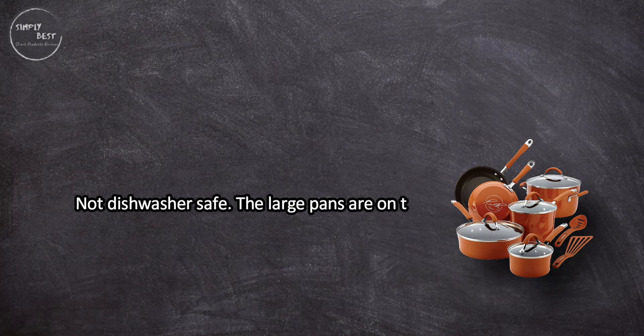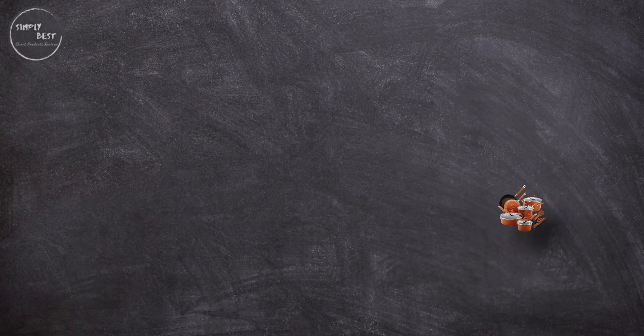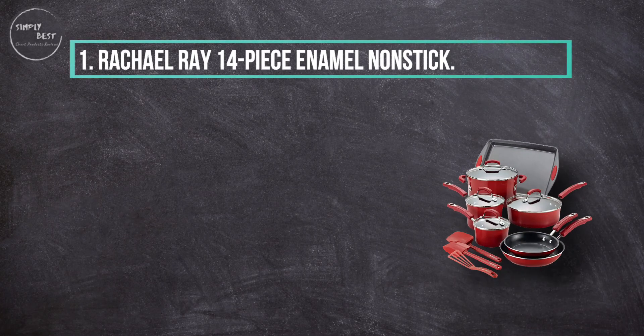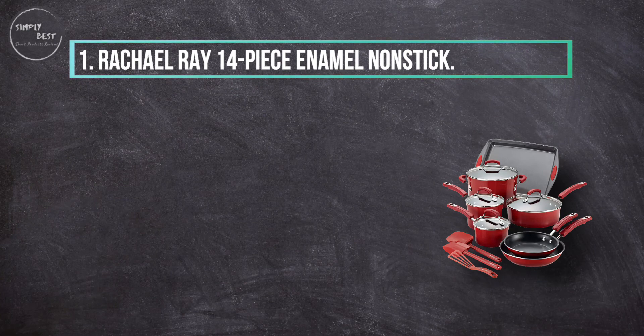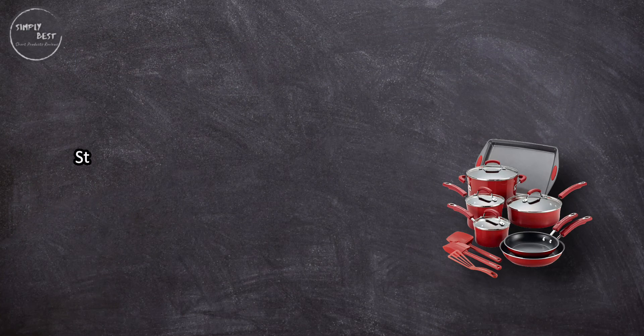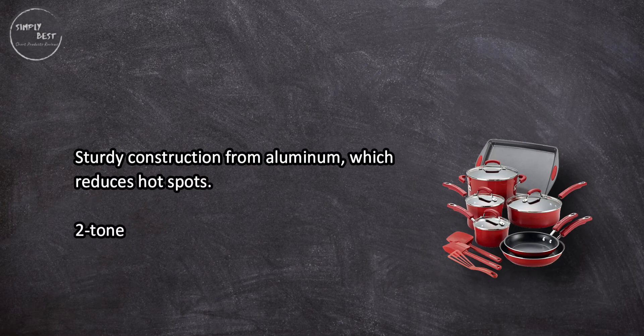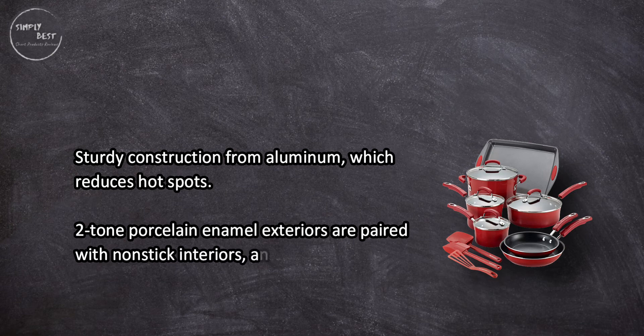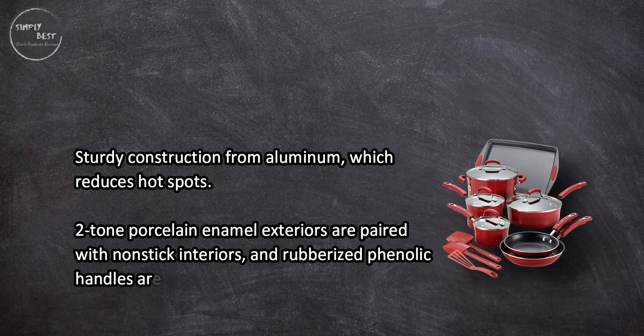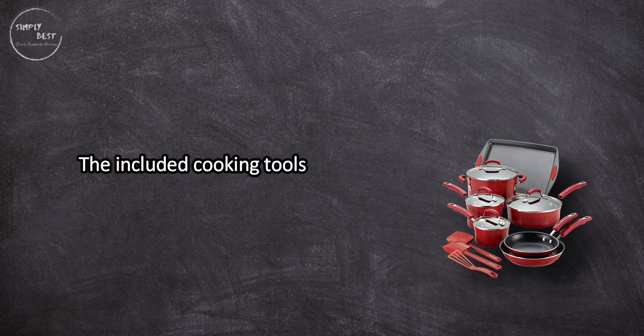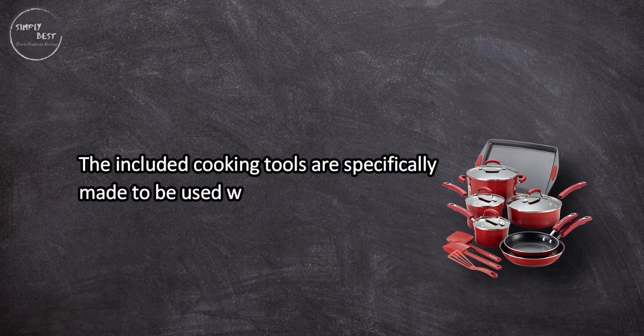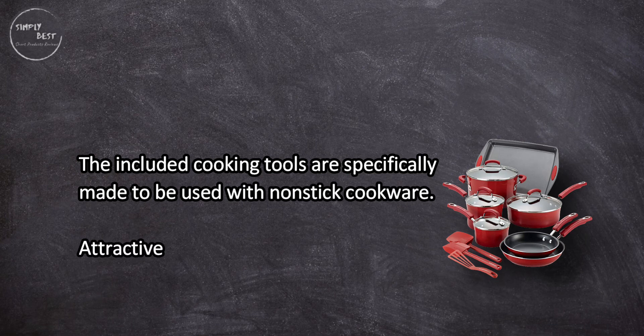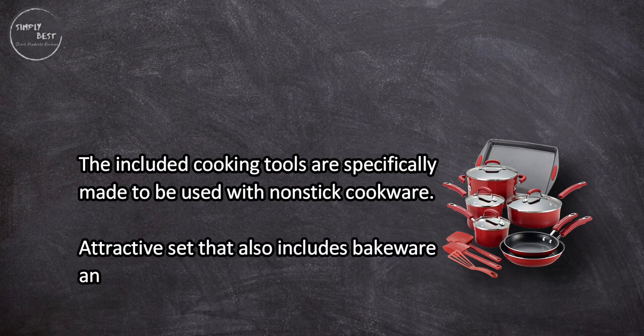At number one, Rachael Ray 14-piece enamel non-stick. Sturdy construction from aluminum which reduces hot spots. Two-tone porcelain enamel exteriors are paired with non-stick interiors, and rubberized phenolic handles are double-riveted. The included cooking tools are specifically made to be used with non-stick cookware. Attractive set that also includes bakeware and kitchen tools.